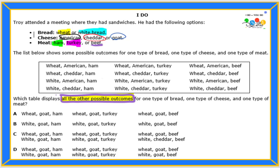First let's figure out how many total possible outcomes we should have. We can use the fundamental counting principle. We have bread, cheese, and meat. For bread, we have two choices. For cheese, we have three choices. And for meat, we have three choices. If we multiply two times three times three, we get two times three is six, and six times three is eighteen. So we should have eighteen possible outcomes or possible combinations.